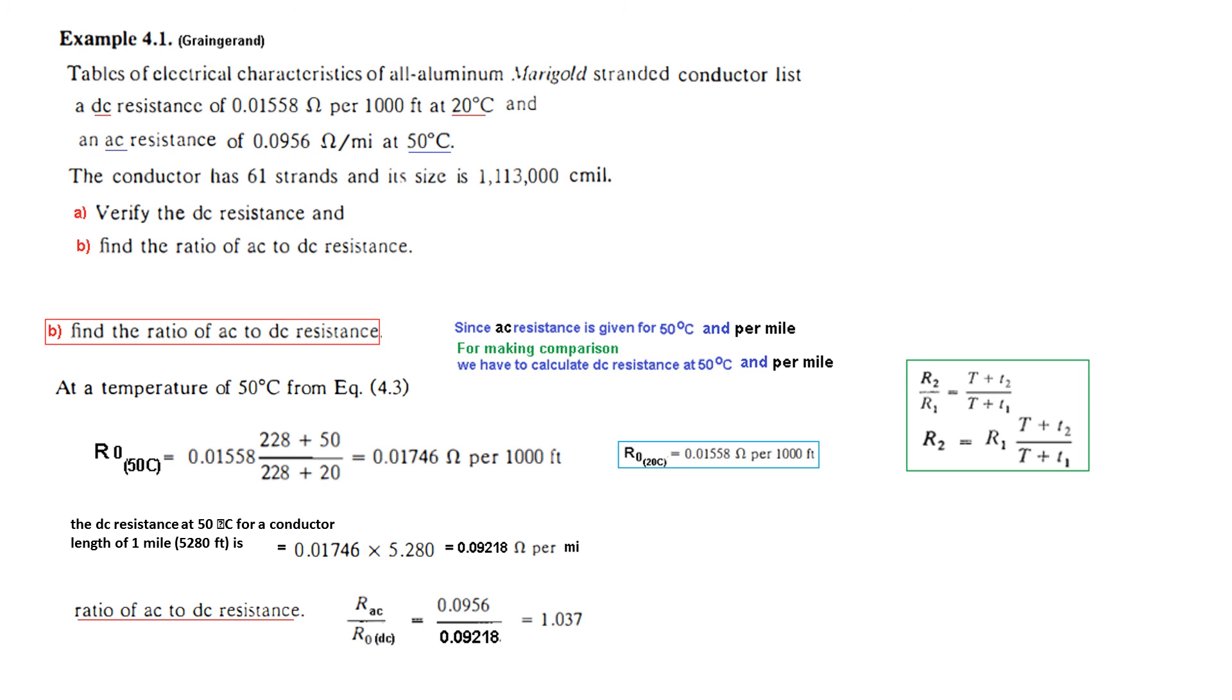So R_AC we had calculated earlier, R_DC we calculated now. This is the ratio and there is an increase. Logically there shouldn't be increase - the resistance should be the same, but because of the skin effect R_AC increases. You can see that there is an increase of 3.7 percent due to the skin effect. I hope this gives you an understanding how you can solve this type of question easily.